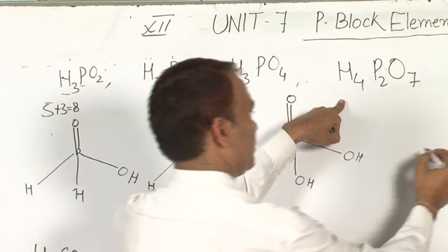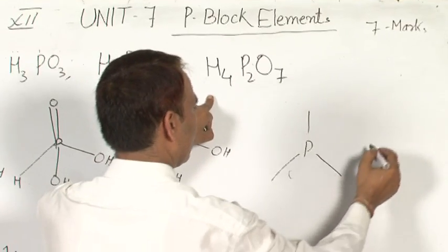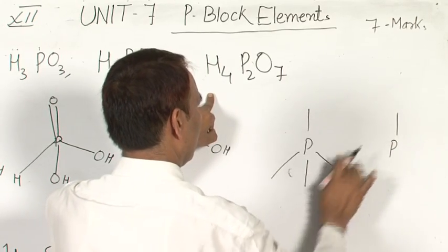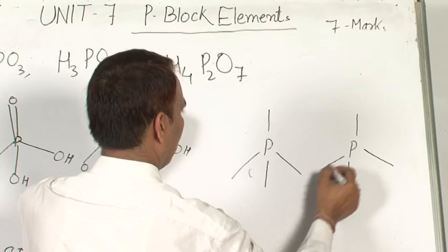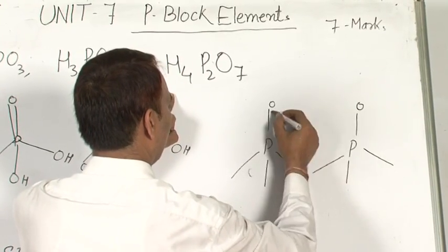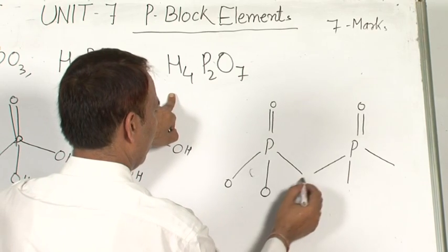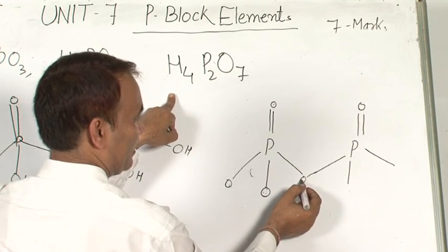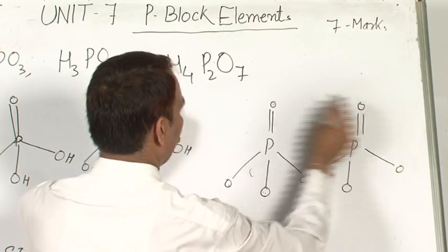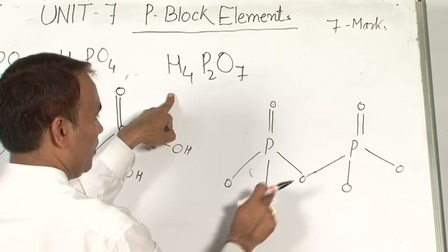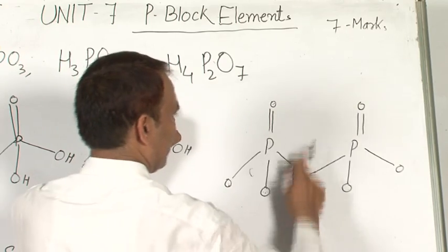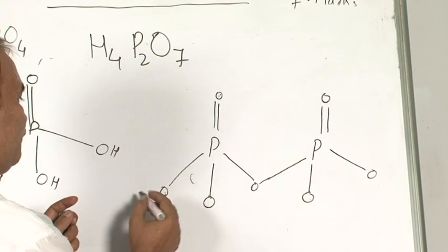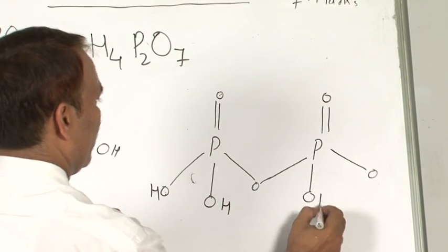For H4P2O7, there are 2 phosphorus atoms: 1 tetrahedral for this phosphorus and another tetrahedral for that phosphorus. There are 7 oxygen total — 1 oxygen will be shared common between the two tetrahedra, giving 7 total. Then 4 hydrogen: 2 with this phosphorus and 2 with this phosphorus — put H, H, H, H accordingly. This is the structure of the oxoacids of phosphorus.